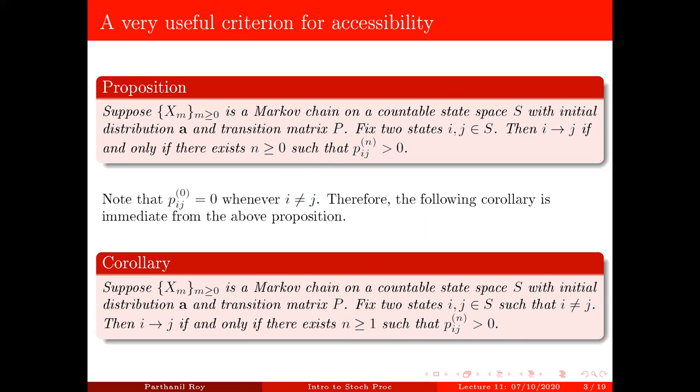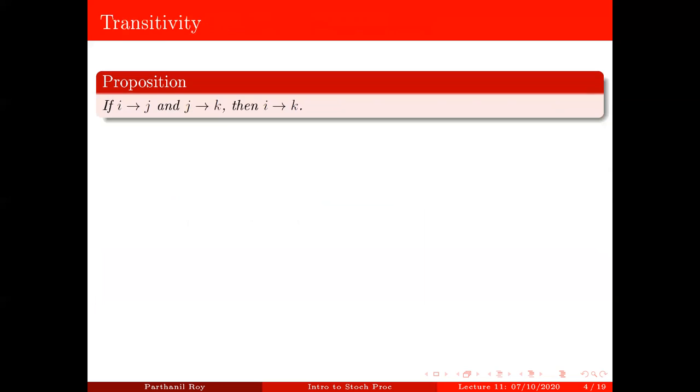So another useful property that follows from this proposition actually is that this relation i leading to j is actually transitive. So in other words, if i leads to j and j leads to k, then i leads to k. Now, this is a very easy consequence of this proposition. So let's prove it.